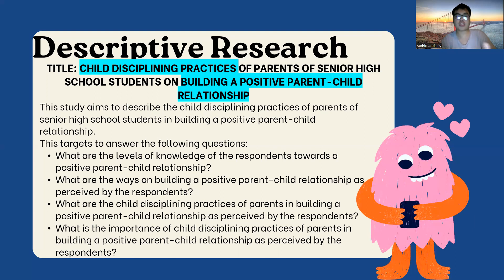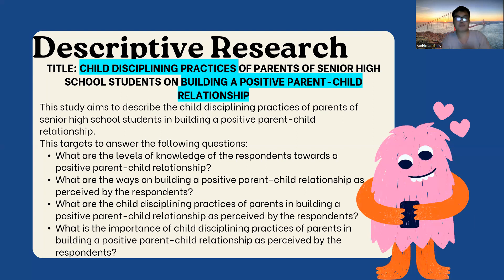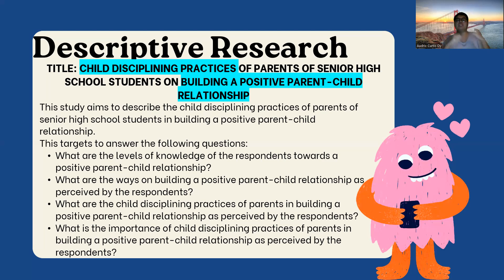We are going to narrow it down. So the second question is: 'What are the ways on building a parent-child relationship as perceived by the respondents?' We become a bit more specific here, focusing on the ways of building a positive parent-child relationship. Then the third question is more specific: 'What are the child-disciplining practices of parents in building a positive parent-child relationship as perceived by the respondents?' The child-disciplining practices specify the ways on building a positive parent-child relationship — you are describing the ways by categorizing them as child-disciplining practices.